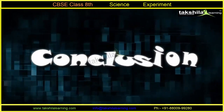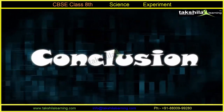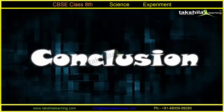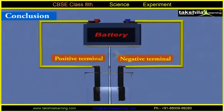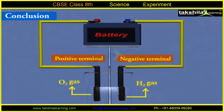Conclusion: These gas bubbles were of hydrogen gas at the negative electrode and of oxygen gas at the positive electrode. These bubbles are formed as a result of some chemical reactions taking place in the solution.